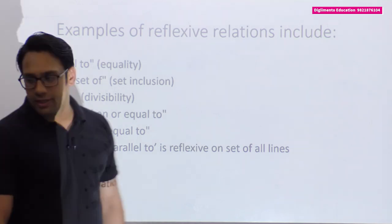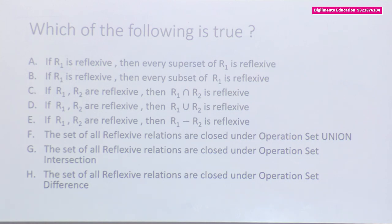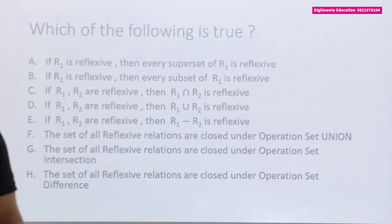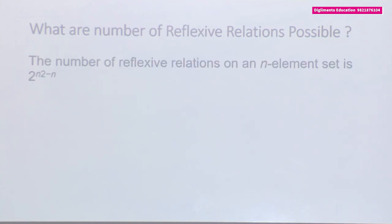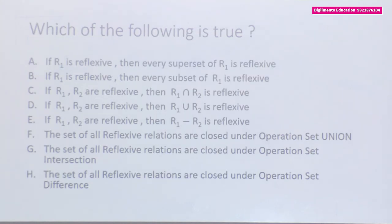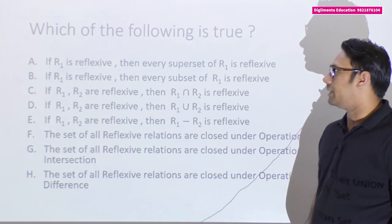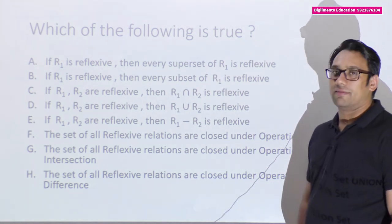We have already seen these examples and taken some questions. Reflexive relations are closed under union and closed under intersection, but not closed under set difference. Reflexive relations are also closed under superset but not closed under subset. If you have any doubts in reflexive relations, please ask. Otherwise I will start with irreflexive.